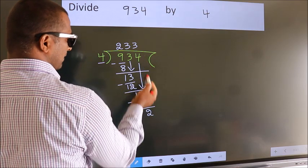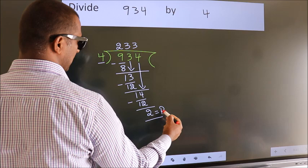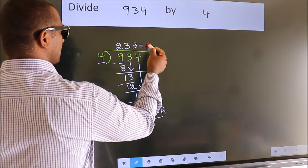No more numbers to bring it down. So we stop here. This is our remainder. This is our quotient.